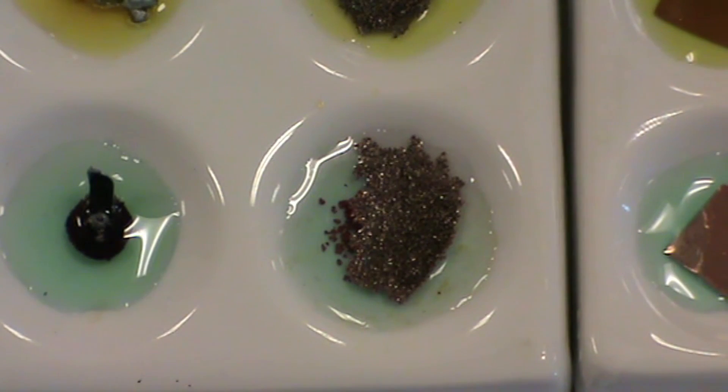A red-brown solid can be observed forming on the surface of the iron powder, indicating the formation of copper metal.